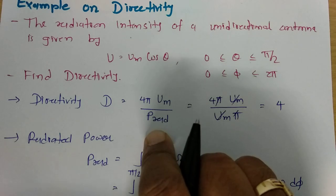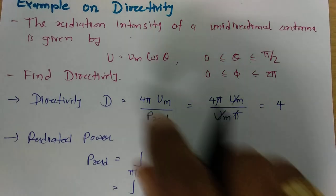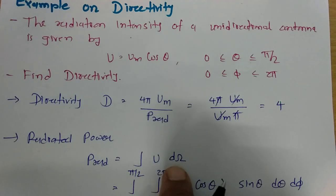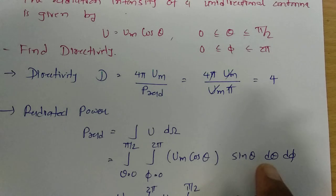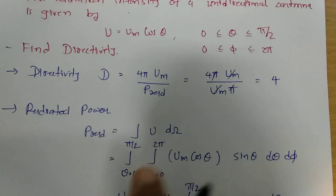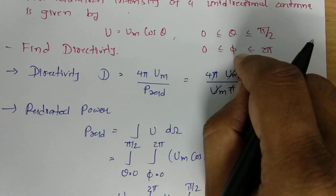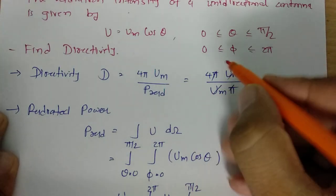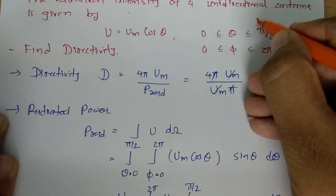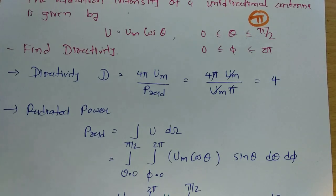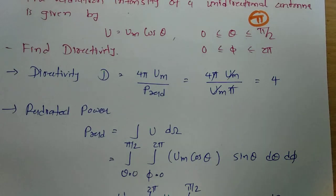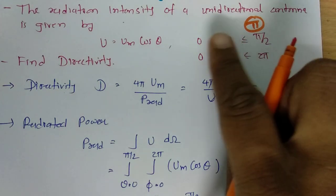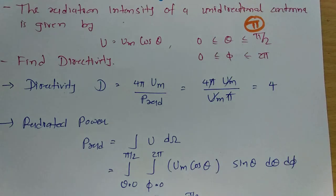To summarize: directivity D = 4π·Um / Pradiated. Radiated power is calculated by integrating radiation intensity over solid angle, where the solid angle element is sin(θ)·dθ·dφ. If limits are not given, use φ from 0 to 2π and θ from 0 to π as the default limits.